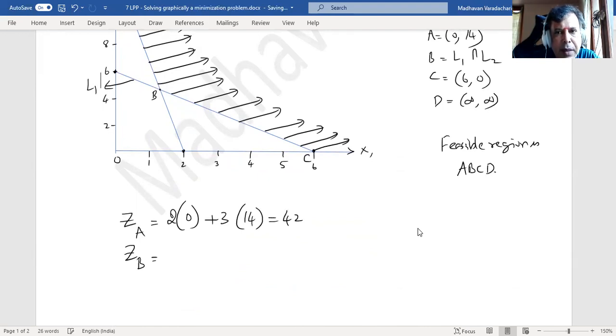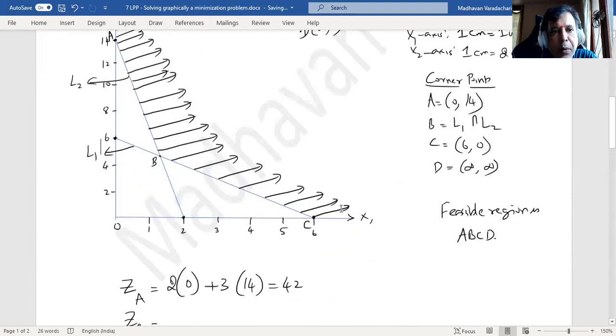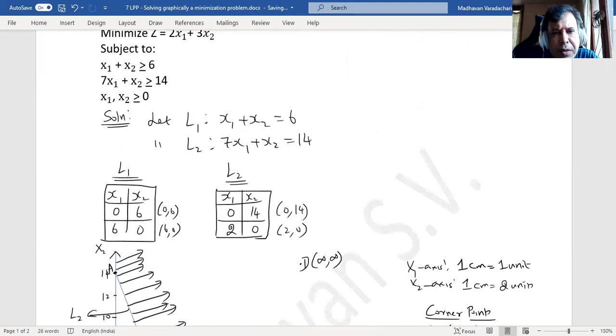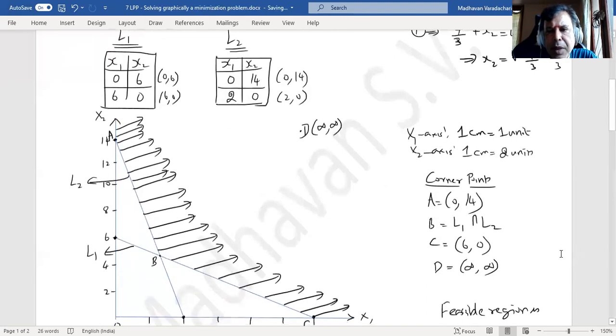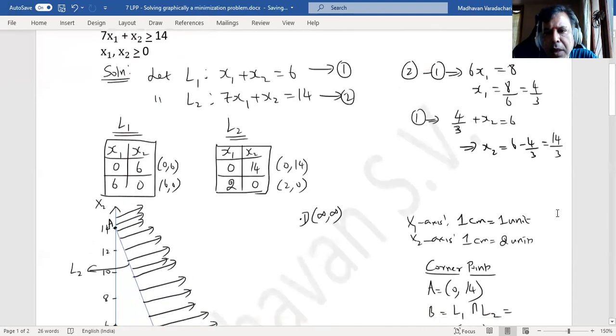Then Z_B - we have to find out B. It is the intersection of L1 and L2, so by solving these two equations, subtracting second equation minus first equation, we get 6x₁ = 8, which means x₁ = 4/3. Substituting this x₁ value in the first equation, 4/3 + x₂ = 6, means x₂ = 6 - 4/3 = 14/3. So our B is (4/3, 14/3).